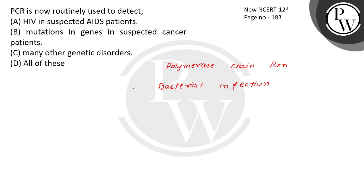Virus infection — after this, you can detect HIV in suspected AIDS patients. And it is also used to detect mutations in genes in suspected cancer patients.